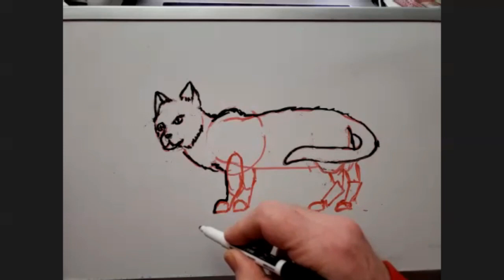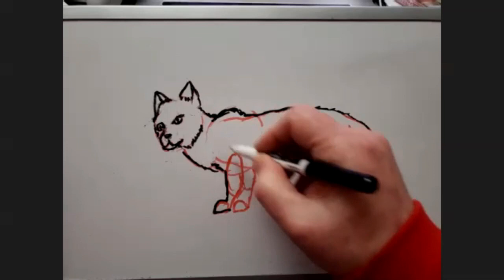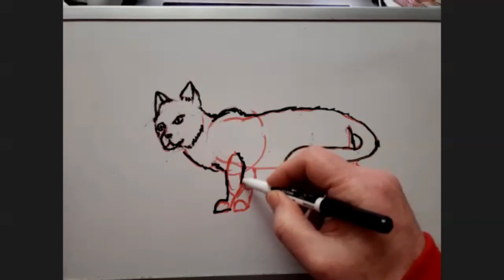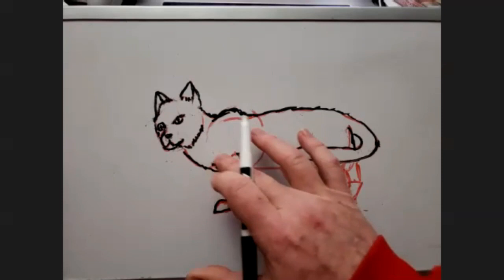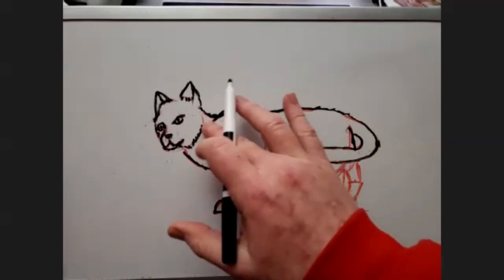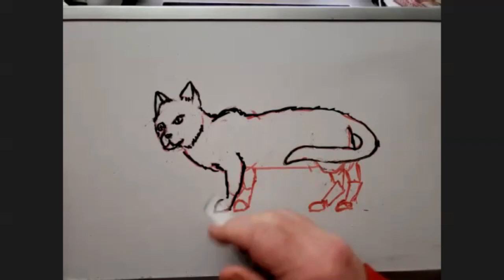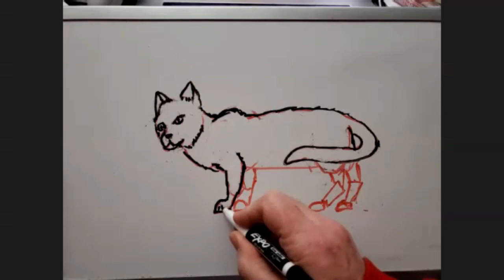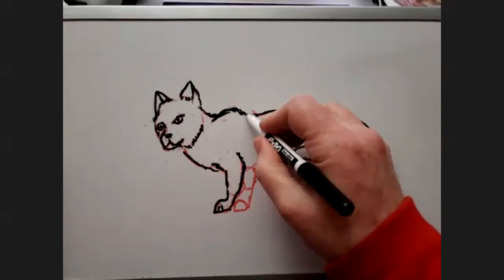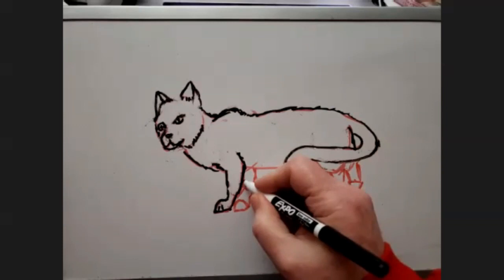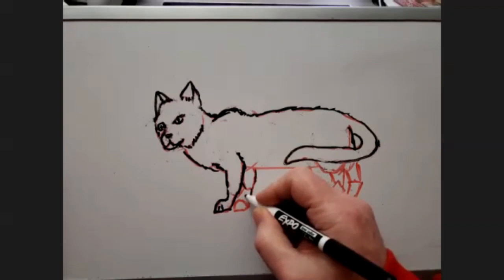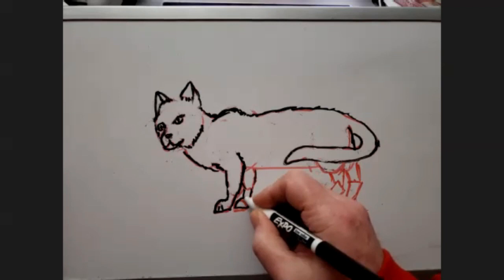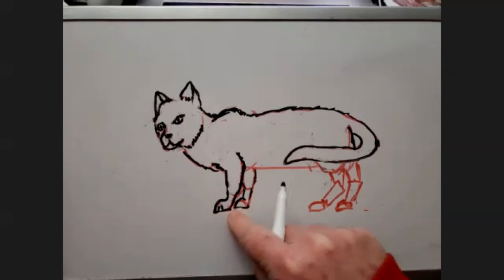There's his little paws. His left foot is facing us here, so we're going to get to see his entire leg. We can draw his little kitty toes.